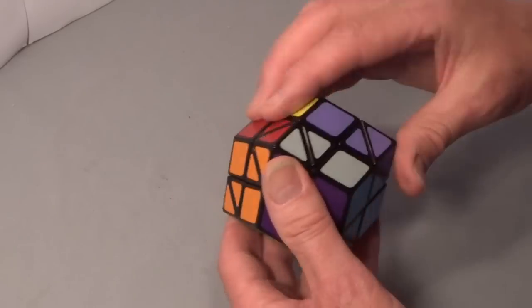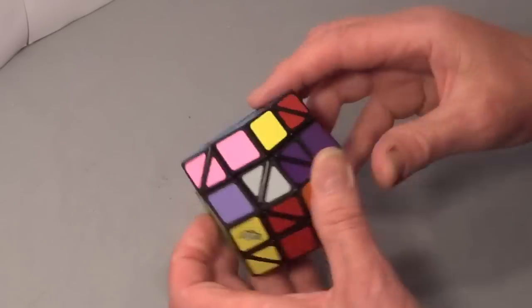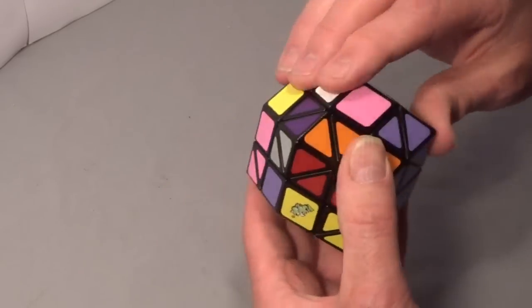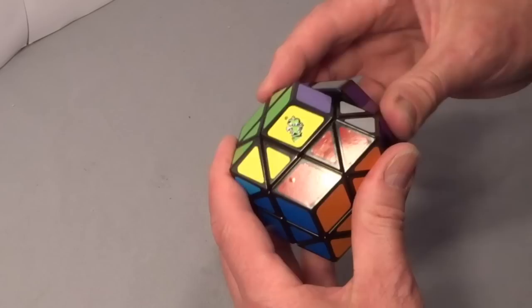You can just scramble it using these 180-degree turns and keep the shape, which is probably how I would use it.